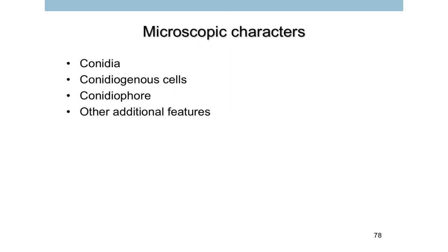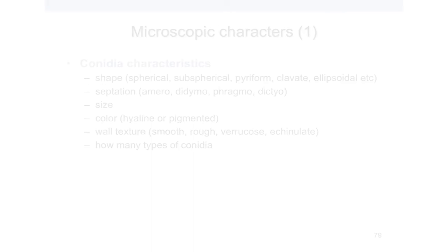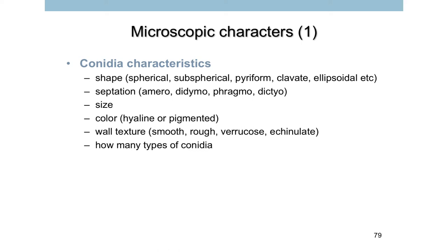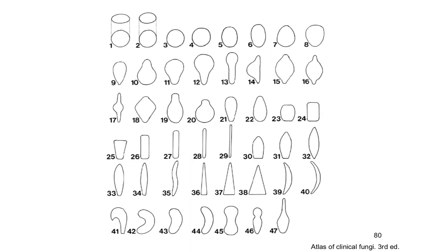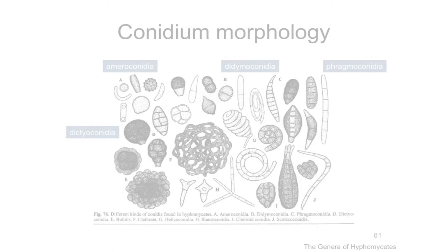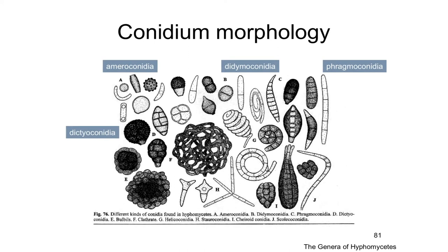After you have a prepared slide, there are four things to check during microscopic examination: conidia, conidiogenous cells, conidiophores, and any additional features. Starting with conidia — what to look for: the shape (spherical, pyriform, or ellipsoidal), any septation within the conidia, their size, color, texture, and how many types of conidia are present — just one type or more than one. This is a nice illustration of different conidial shapes adapted from the Atlas of Clinical Fungi; each shape has its own specific name.